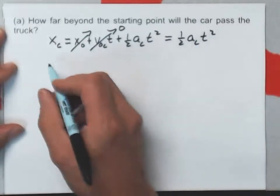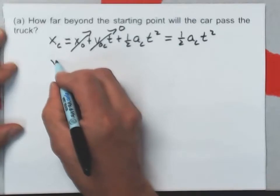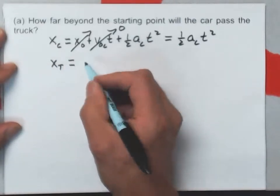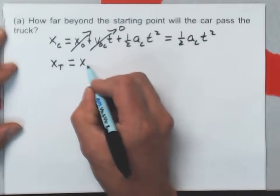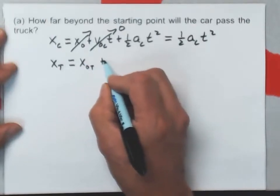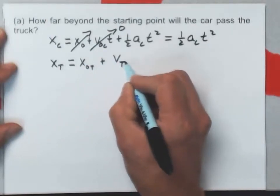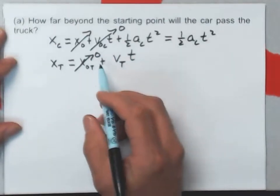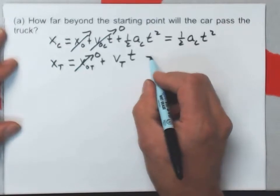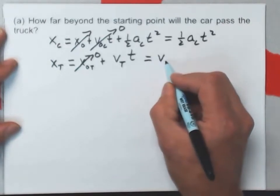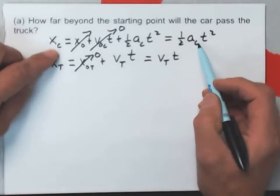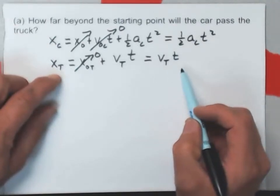For the truck, it's just going at constant velocity. Its most general equation under that circumstance might be X-naught for the truck plus V for the truck times T, but it started from zero as well. So, this is just V for the truck times T. That's X for the car is this thing, X for the truck is this.